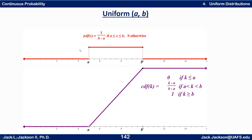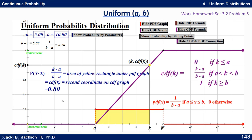So there, side by side, are the formulas and graphs of the PDF in red and the CDF in purple. Just to reinforce how this works: as a point moves to the right, you're accumulating more area under the PDF — which is probability — and that equals the y-value on the CDF.